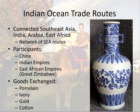Participants are similar in that you have China, but different in that you now have Indian empires, East African empires including Great Zimbabwe, and Islamic empires that also played into the Indian Ocean trade routes. Goods exchanged were much more diverse than on the Silk Road, because Africa has a vast array of natural resources not available in Eurasia. Wood could be brought to Arabia where there isn't much, allowing people to build things they couldn't before. You also see the movement of porcelain, ivory, gold, and cotton.